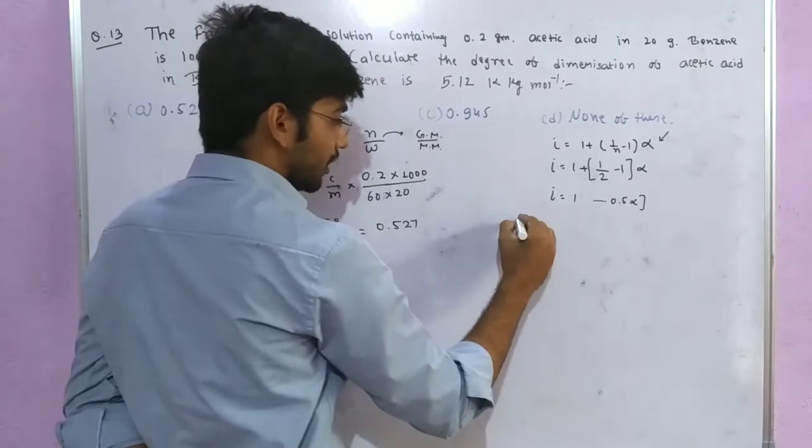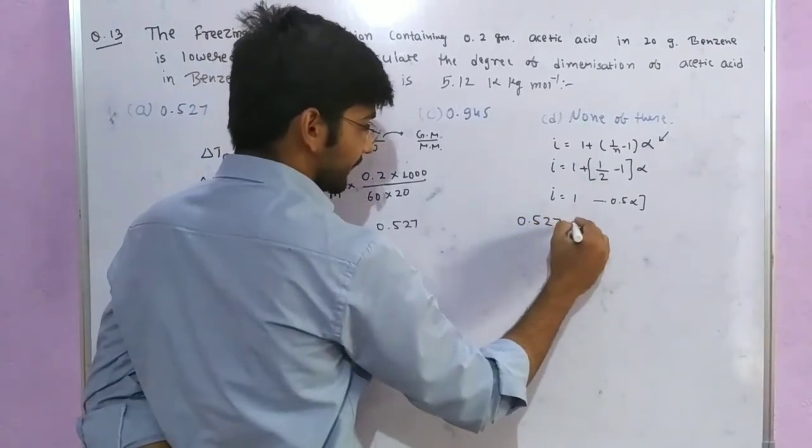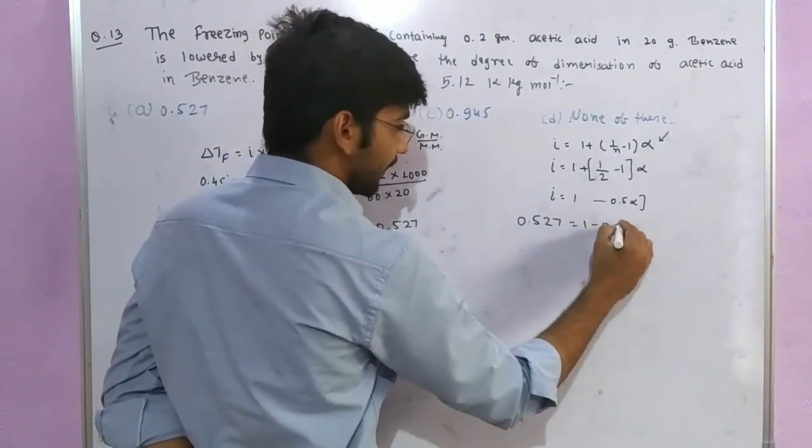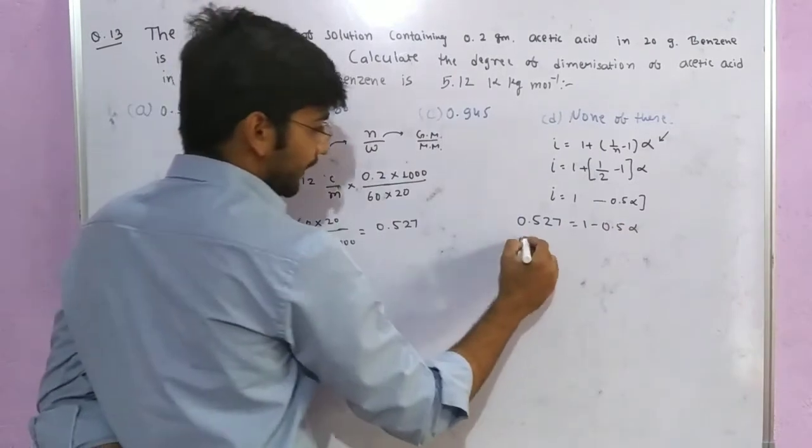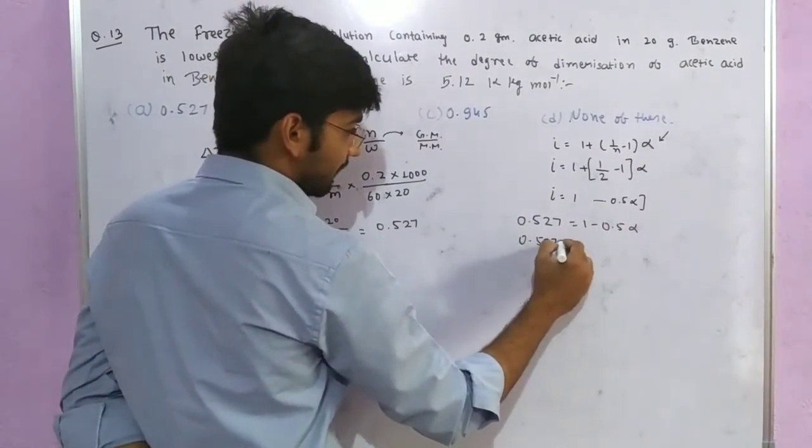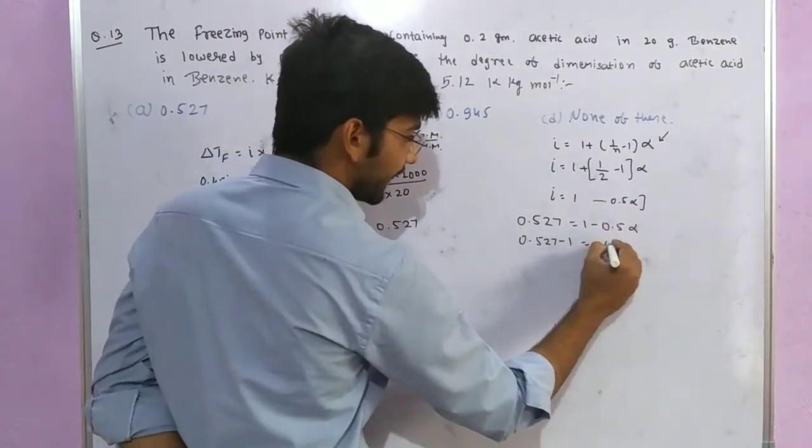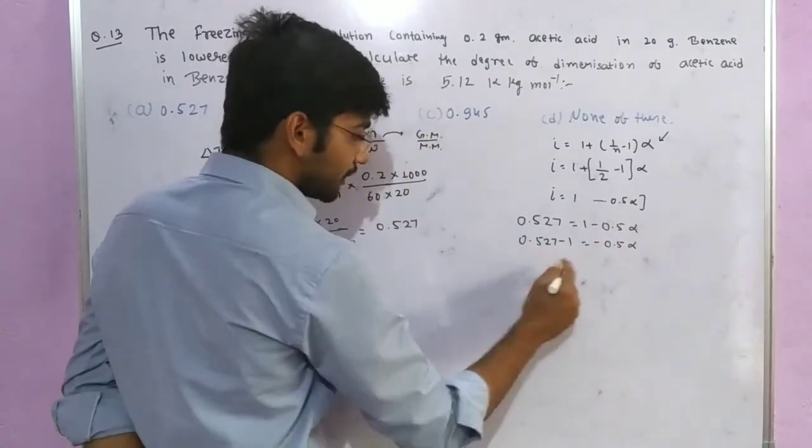So the van't Hoff factor i equals 0.527. Now substitute: 0.527 equals 1 minus 0.5 alpha. Therefore, 0.527 minus 1 equals minus 0.5 alpha.